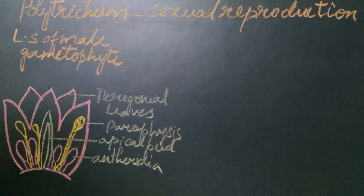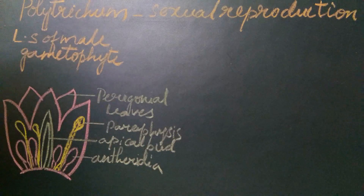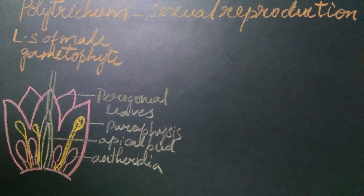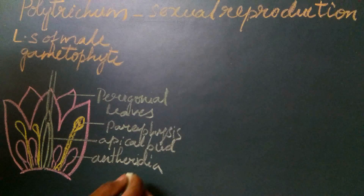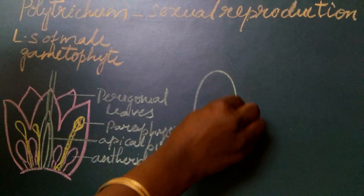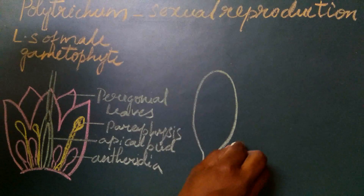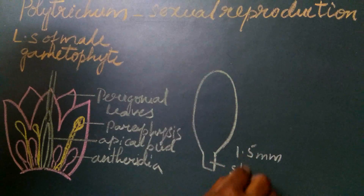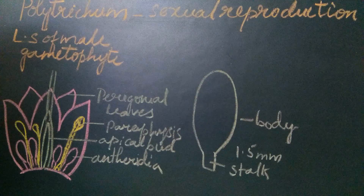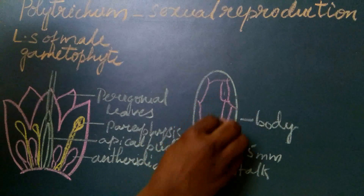Because the apical bud is still present after the formation of the male sex organs, this bud continues its growth and the stem elongates — this is called proliferation. If we look at each antheridium, a mature antheridium shows a small stalk and a club-shaped body. It is about 1.5 mm in length, with a very small stalk and a club-shaped body. The body of the antheridium is covered by a single layer of cells called the jacket cells.